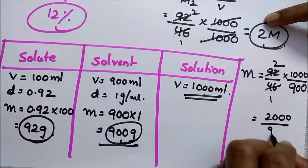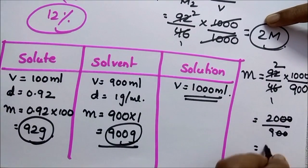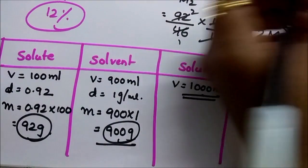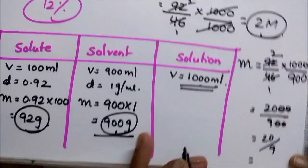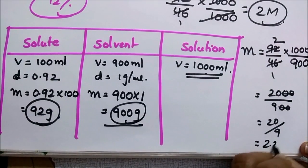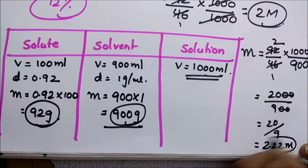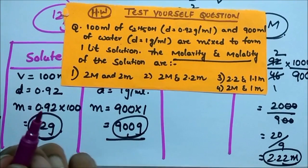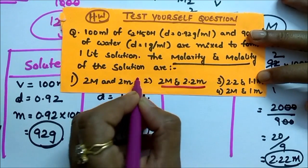We get 2.2 molal. Then which one is the correct option? In this, 2 molar and 2.2 molal, second option is correct. If you got the right answer you are perfect in this topic.